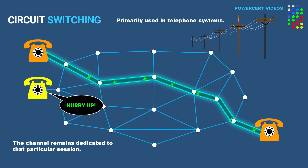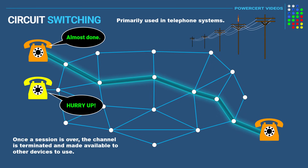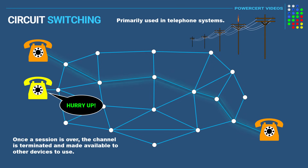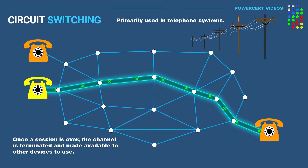But once the session is over, the channel is terminated and then made available for other devices to use. Circuit switching is primarily used in telephone systems that utilize a dedicated physical path. So in this example, we see data going from the sender to the receiver along the same dedicated path to the destination.